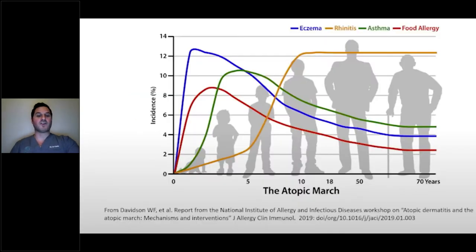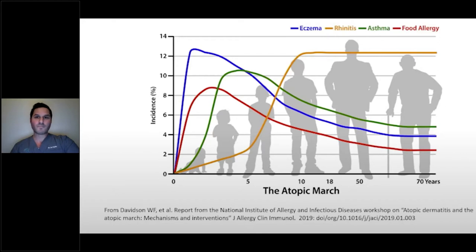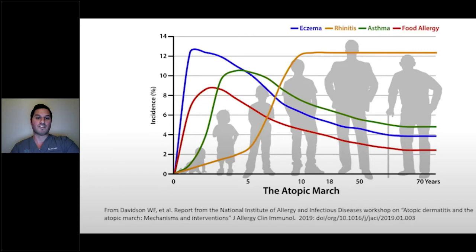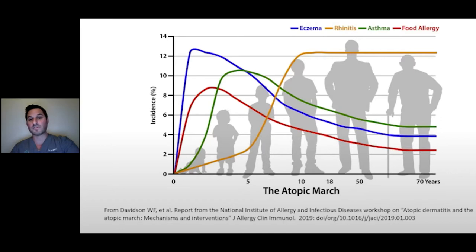Here's a chart showing the atopic march. Eczema often starts early in infancy, though it can develop later — the vast majority of patients present in their first few years of life. After eczema, we might see food allergy develop, commonly to milk, egg, wheat, soy, peanut, tree nut, fish, or shellfish — the most common food allergens accounting for the vast majority of food allergies in the US. After food allergy, asthma often develops, with children beginning to wheeze or have prolonged coughing with common colds or respiratory infections.